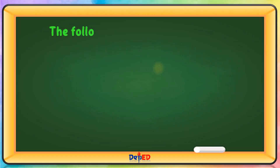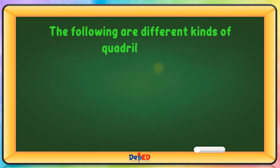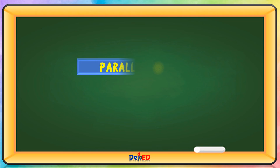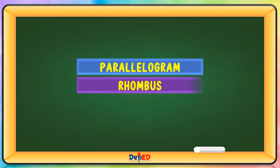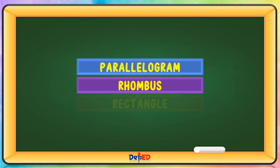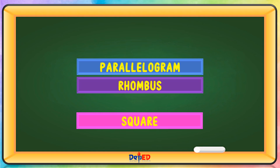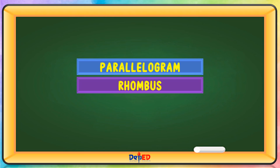The following are different kinds of quadrilaterals: a parallelogram, a rhombus, a rectangle, a square, and a trapezoid.